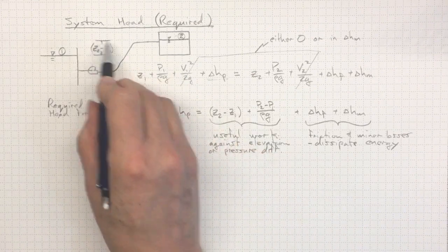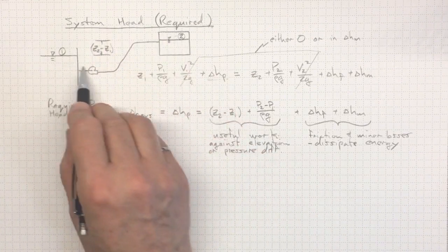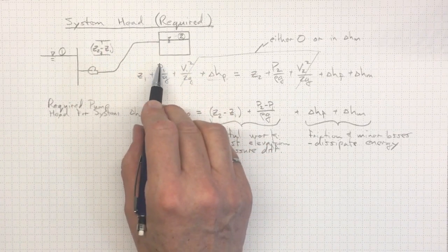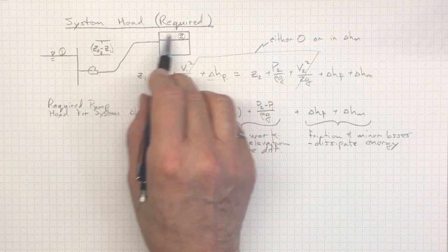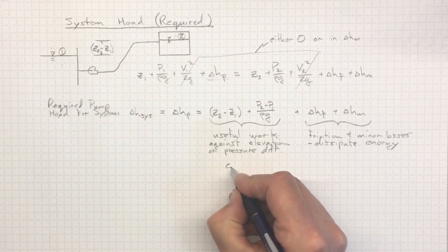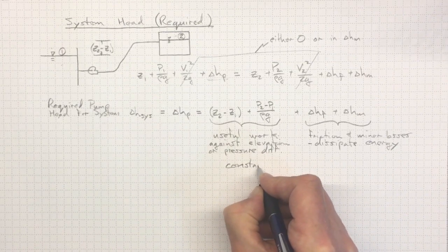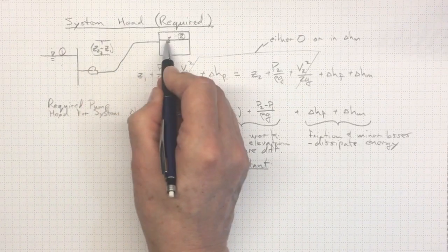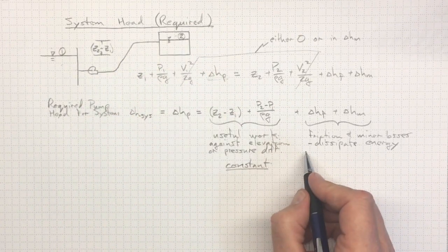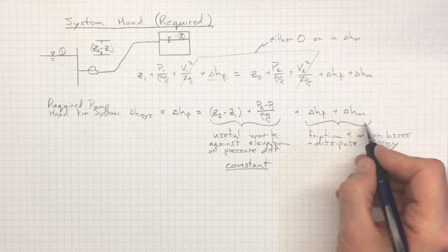Now, this elevation change, none of this tankage or the lake level is moving, at least not much. So, that elevation change is a constant, and for a given application, that pressure difference is a constant. So, these will be constant. No matter what the flow rate is, it's always going to have to overcome that change in height and change in pressure.